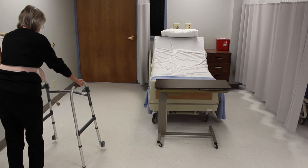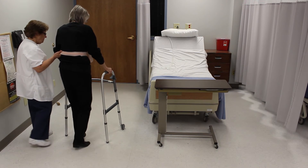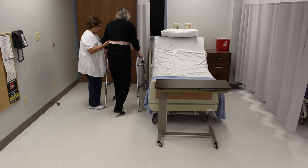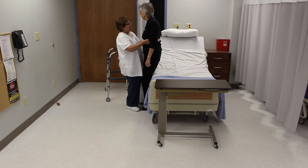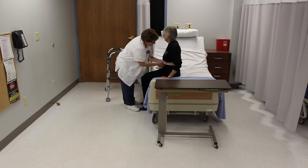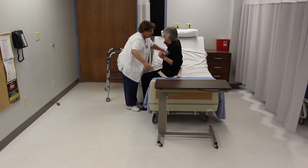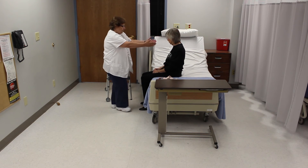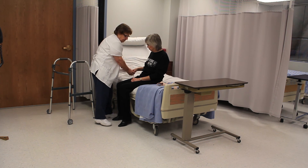Returns the resident to the bed or chair. Removes the gait belt. Positions the resident comfortably and checks for alignment. Leaves the bed in the lowest position. Places call light within the resident's reach.